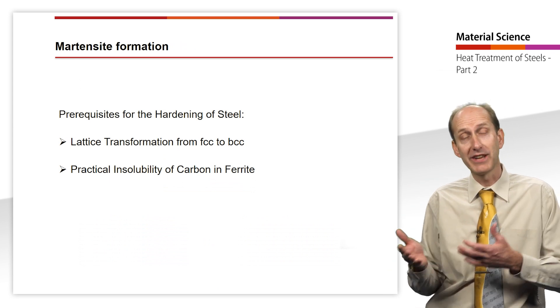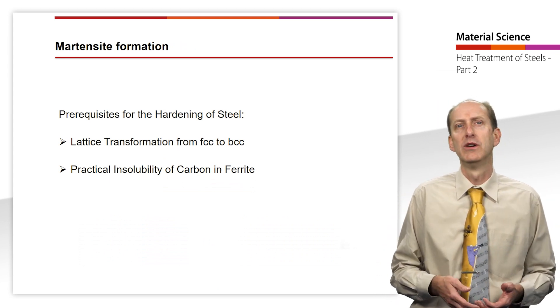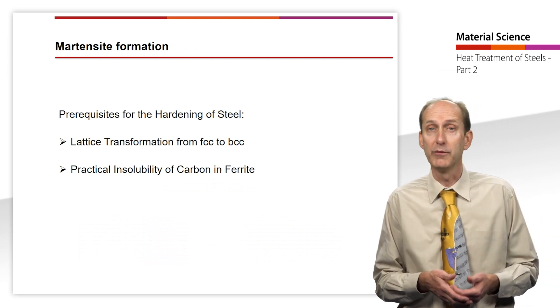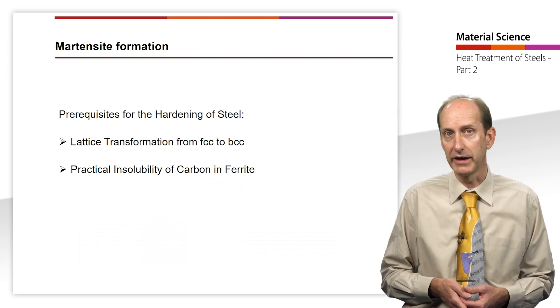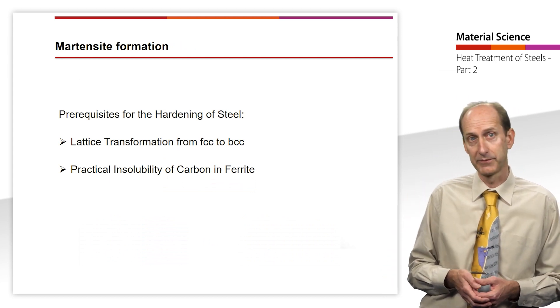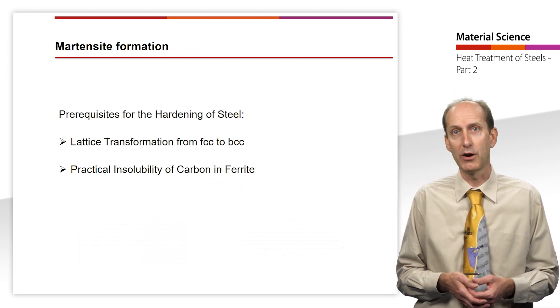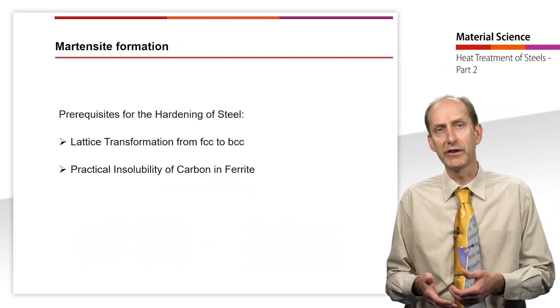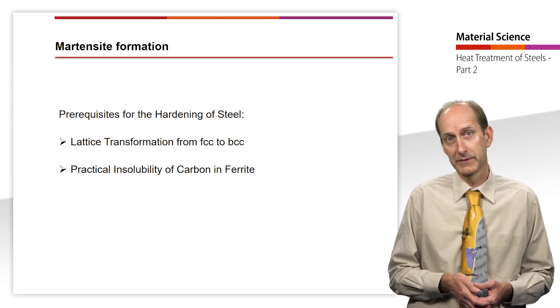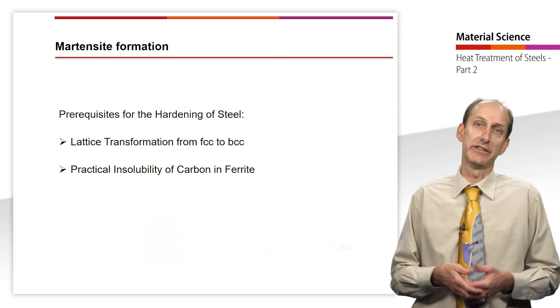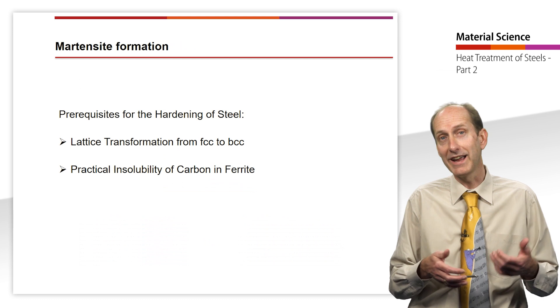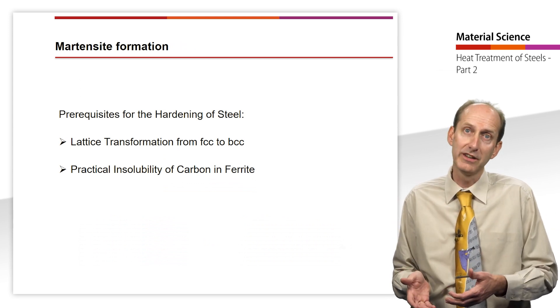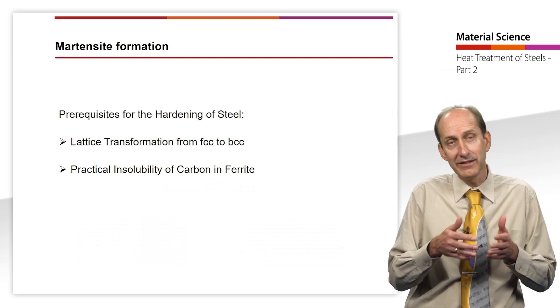From the videos about the time temperature transformation diagram, we already know the prerequisites for hardening steel. First, there must be a lattice transformation from face-centered cubic austenite to body-centered cubic ferrite at the holding point AR3. Furthermore, the practical insolubility of the carbon and the ferrite must be given, and as we already learned, the transformation of austenite to ferrite only occurs with very slow cooling. If the cooling rate is increased, the position of the holding point A3 and A1 of a steel with a certain carbon content changes. As the cooling rate increases, the holding points merge and then disappear completely.